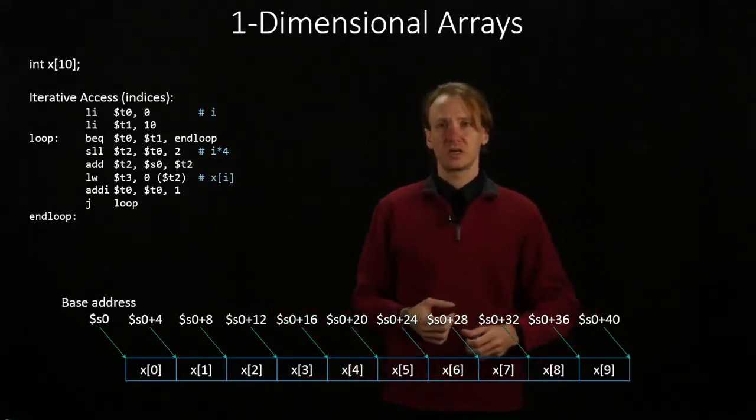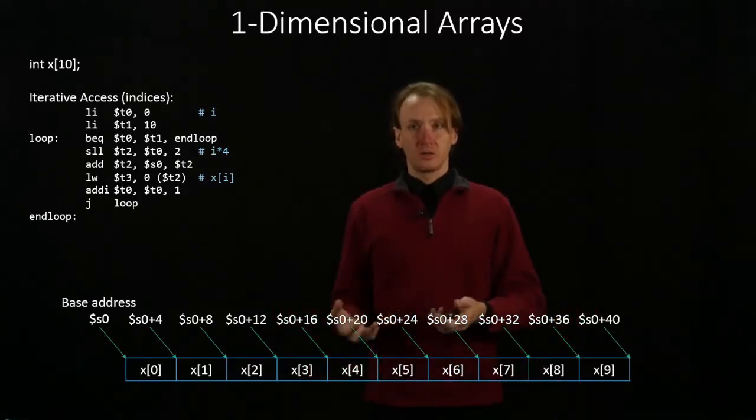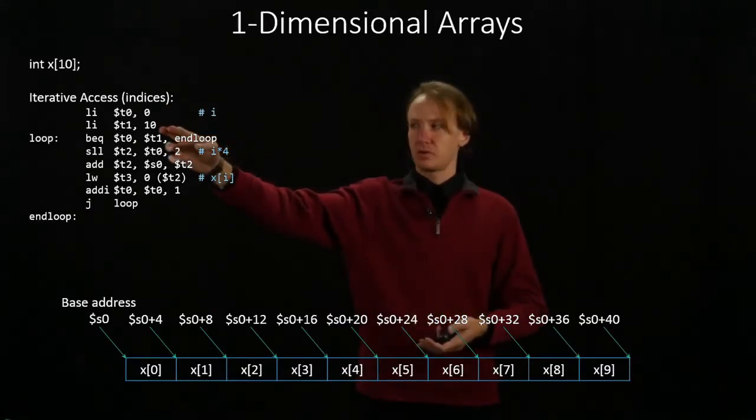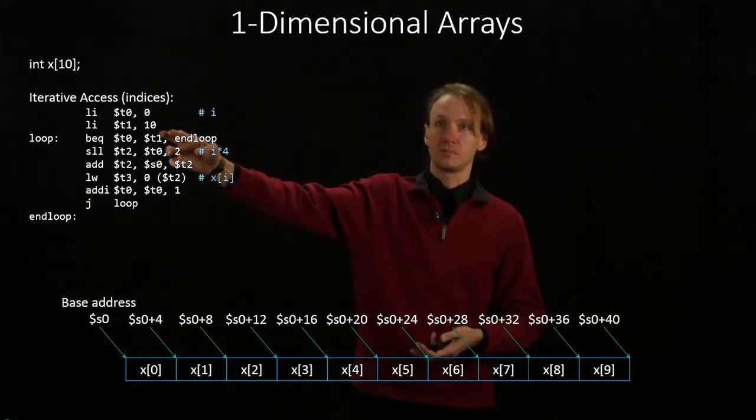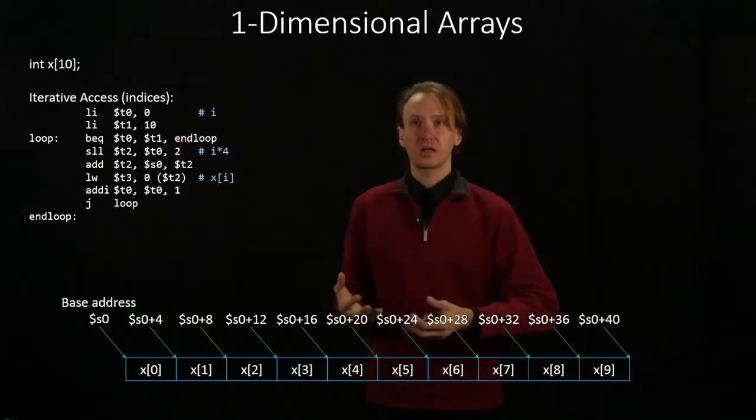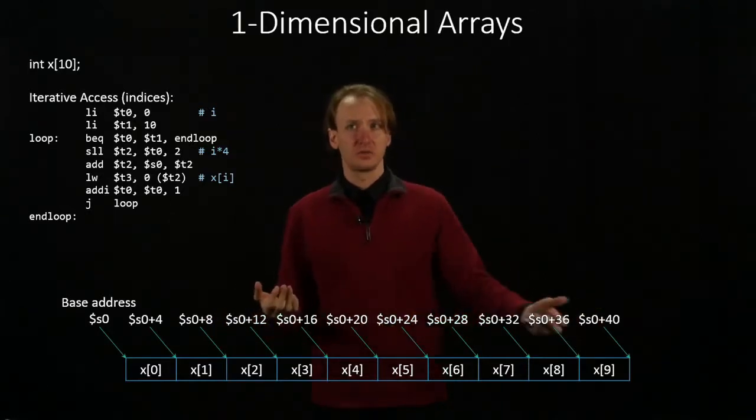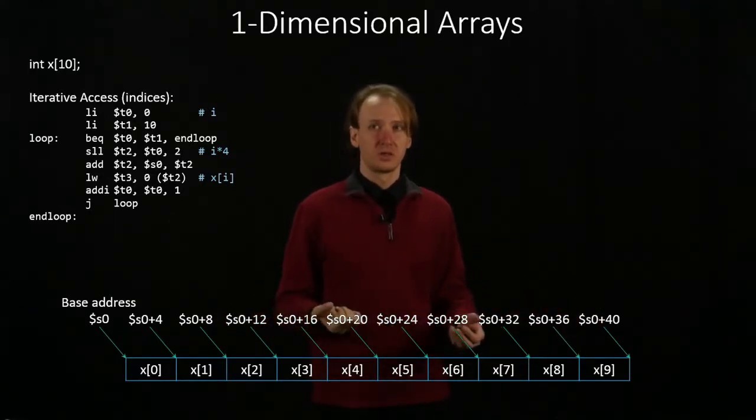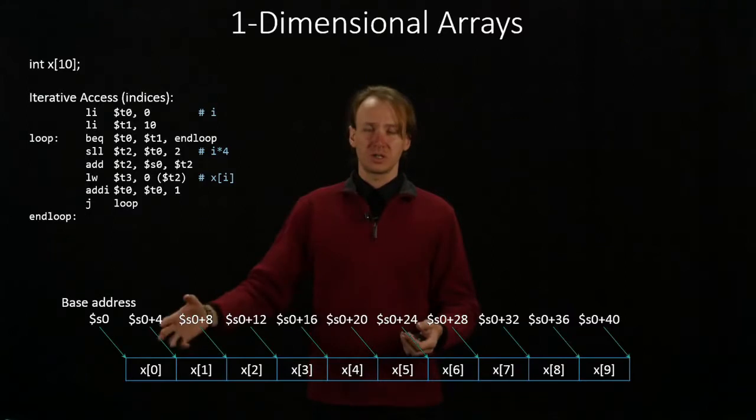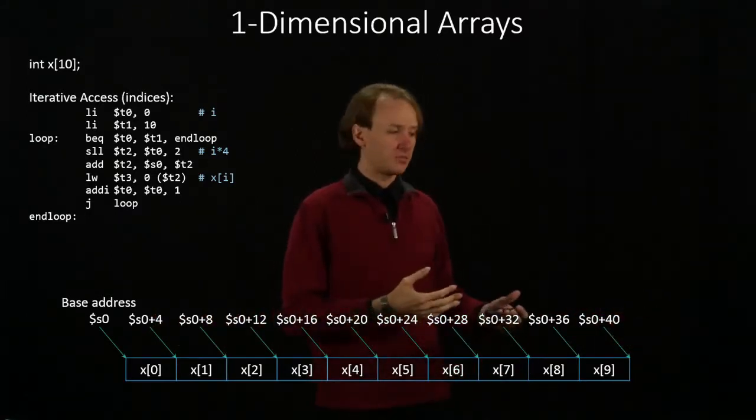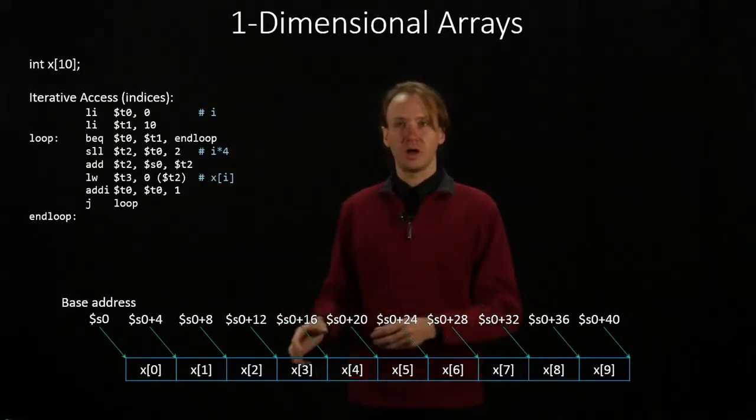So to do this, I'd start by putting my loop index, say i, into perhaps t0, and the total number of elements into t1. Then I can run this loop until t0 actually gets to be the number of elements. So once i has been incremented to 10, then I know that I would be trying to access something off the end of my array, and I should just quit my loop.